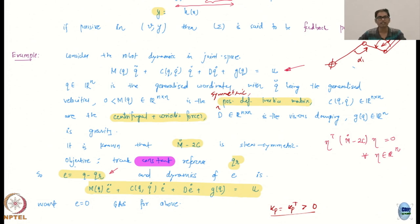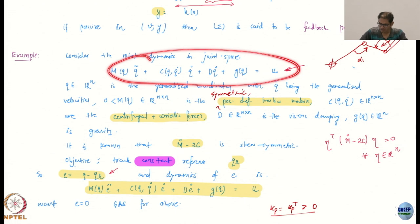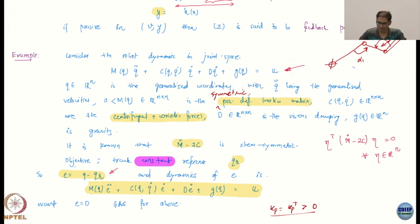The only cases where you cannot write the robot dynamics in this form is typically the non-holonomic cases, where you have some non-holonomic constraints. We have not talked about those, so do not worry about it.